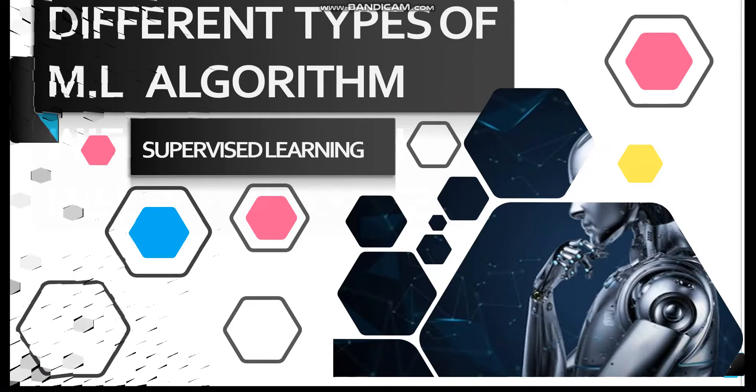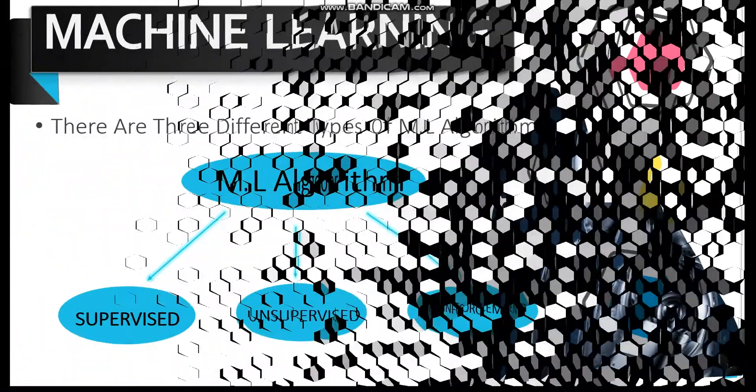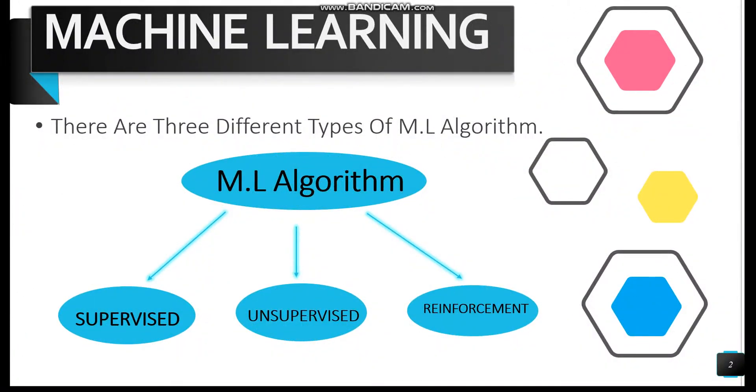Machine learning algorithms are classified into three different types: supervised learning algorithm, unsupervised learning algorithm, and reinforcement learning algorithm.